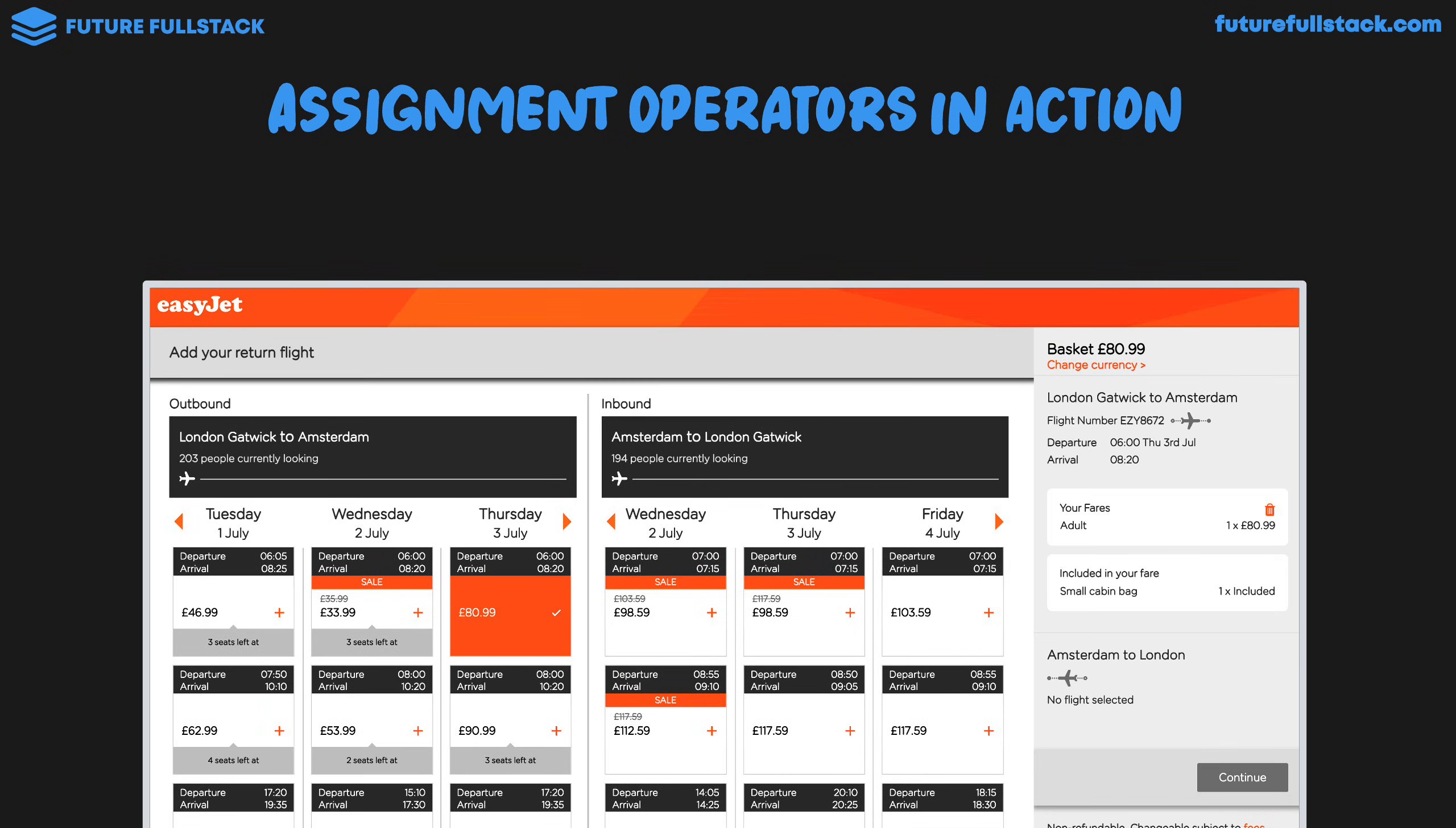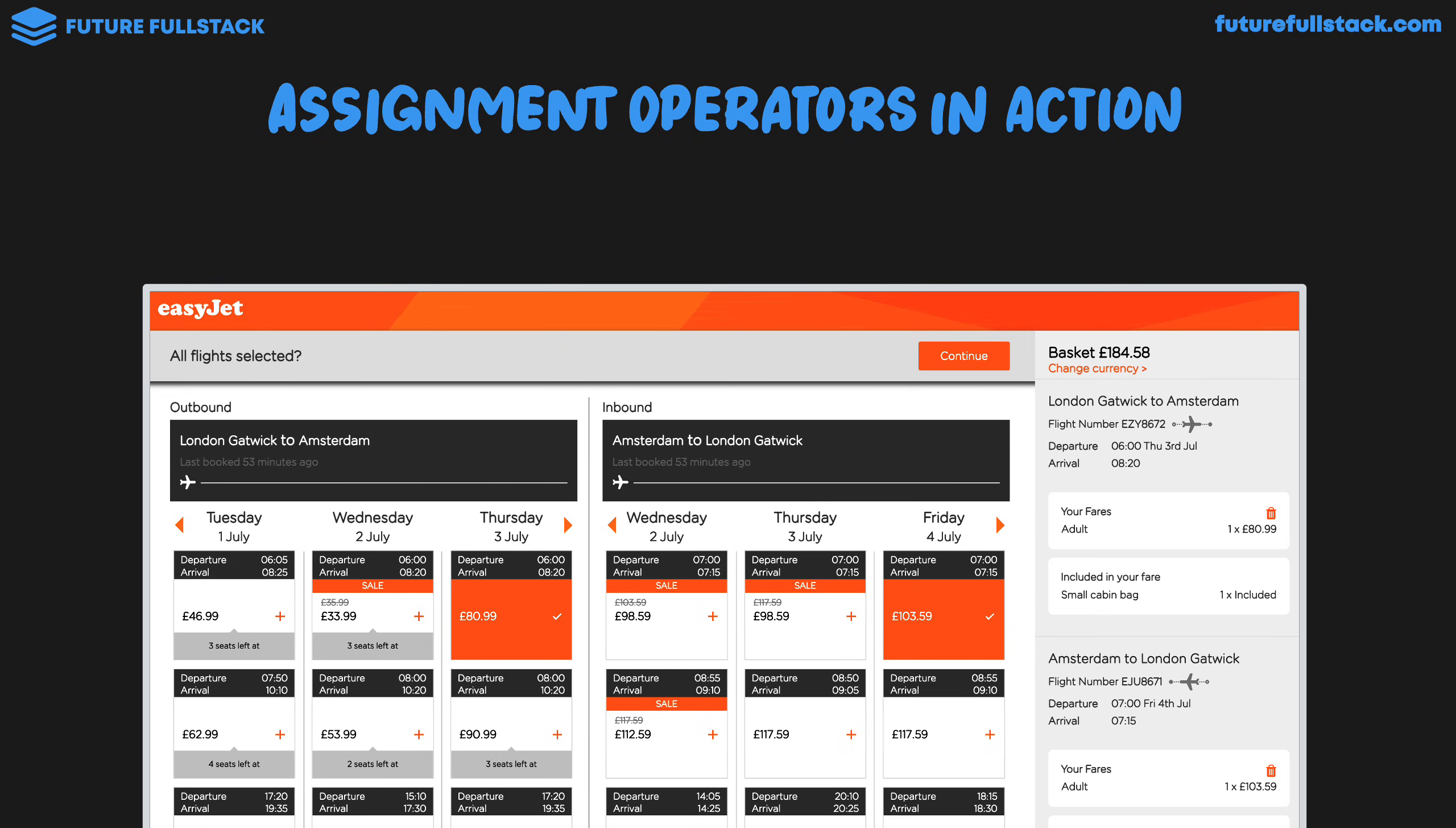As a user, I'll add my outbound flight over here. So the basket updates to 80.99. This would be achieved with addition assignment like this: totalPrice plus equals 80.99. I would then add on my inbound flight of 103.59 and my basket updates. So in JavaScript, it would look like this: totalPrice plus equals 103.59.